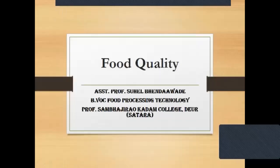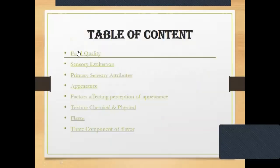Hello students, today we discuss about food quality. In this topic, we will cover sensory evaluation, primary sensory attributes, appearance, factors affecting perception of appearance, texture, chemical and physical aspects, flavor, and the three components of flavor.